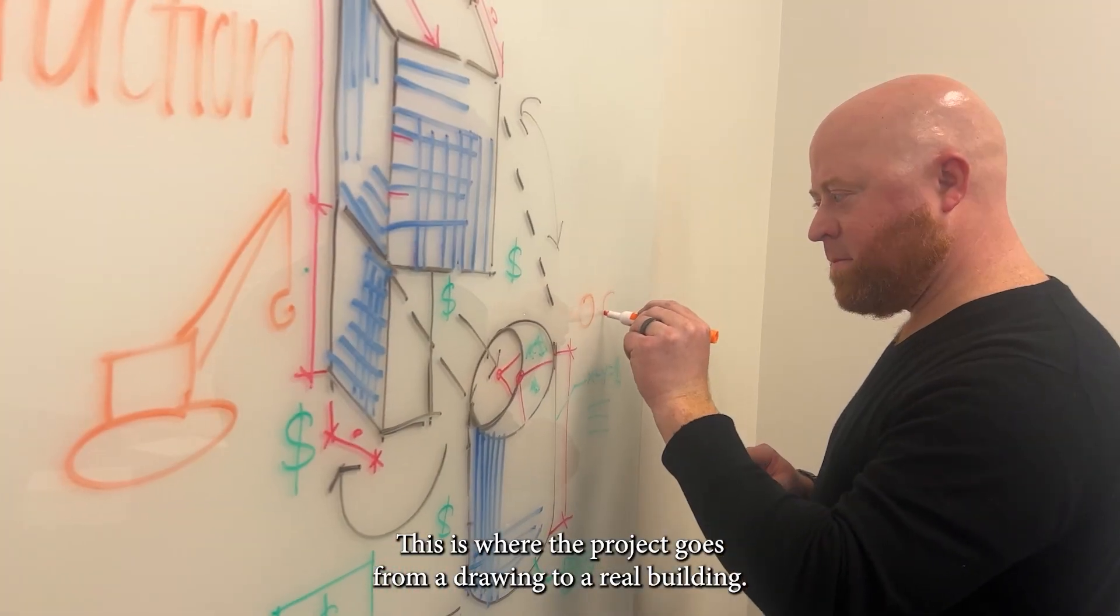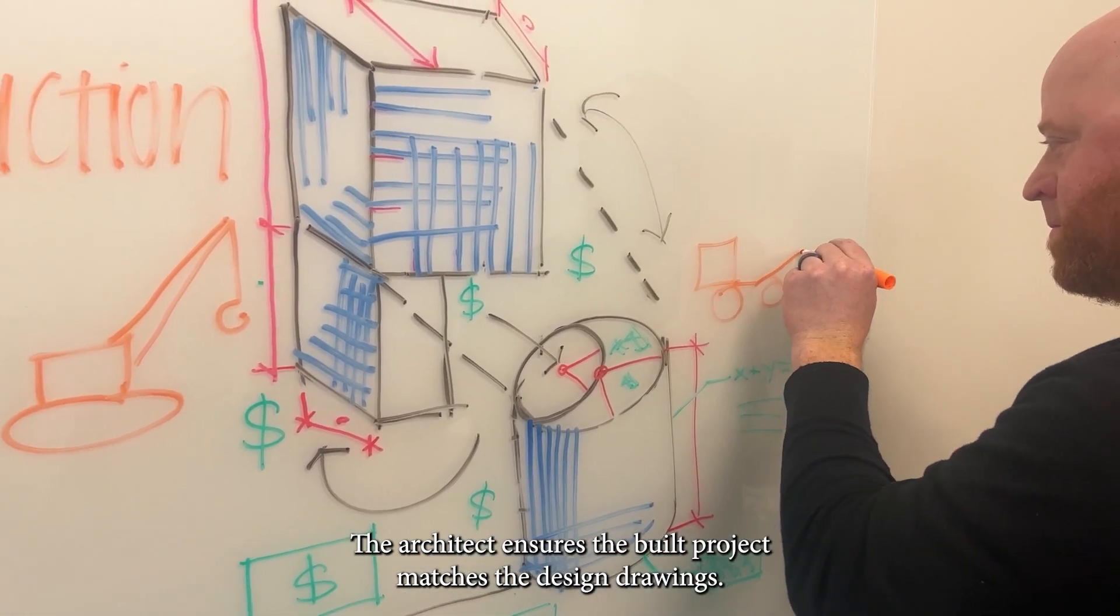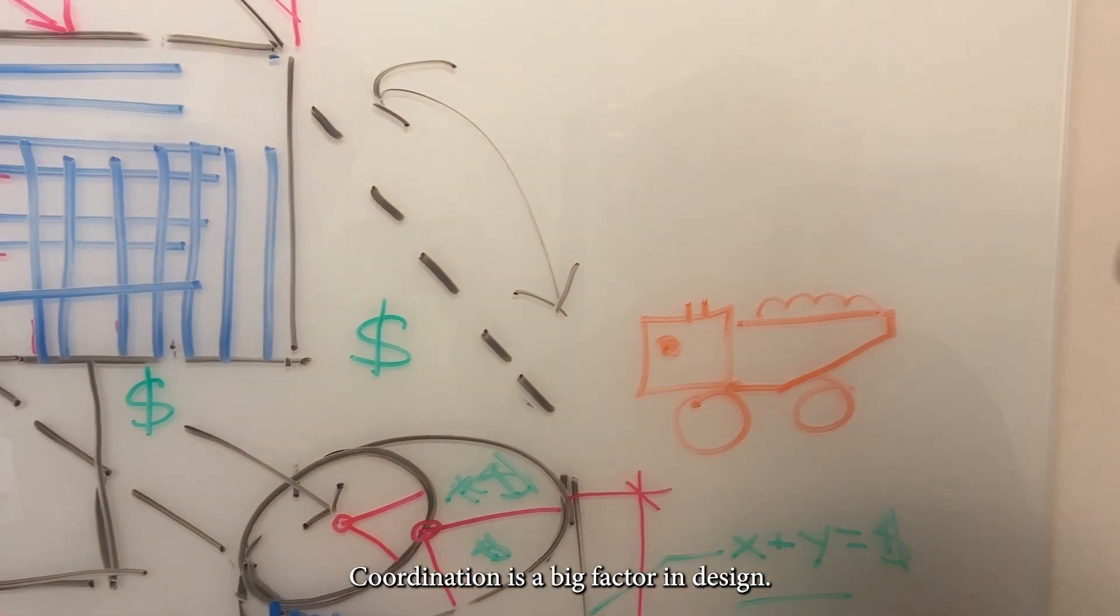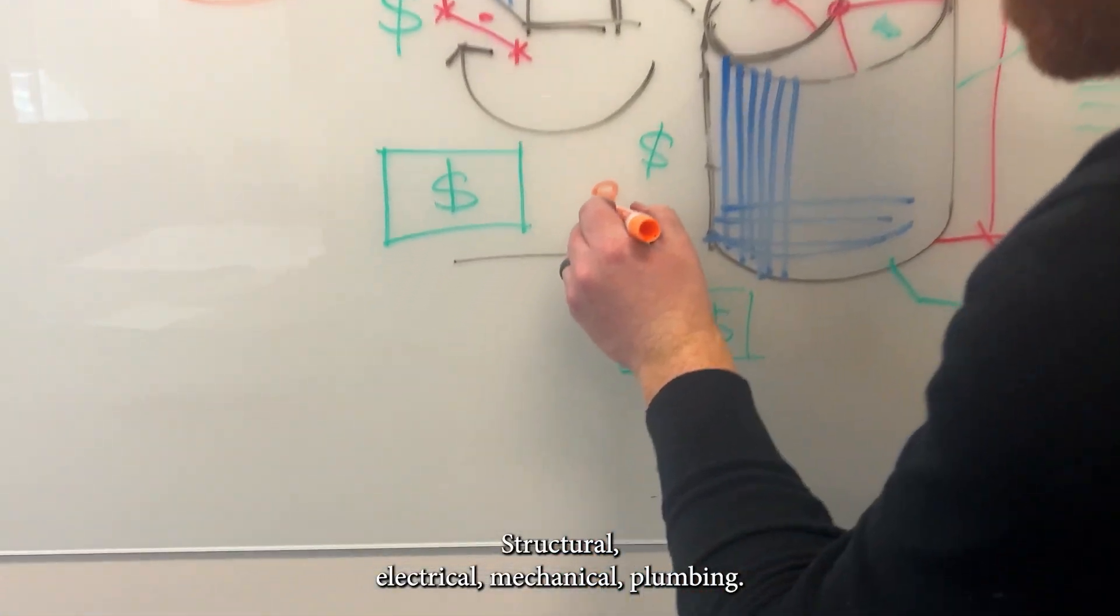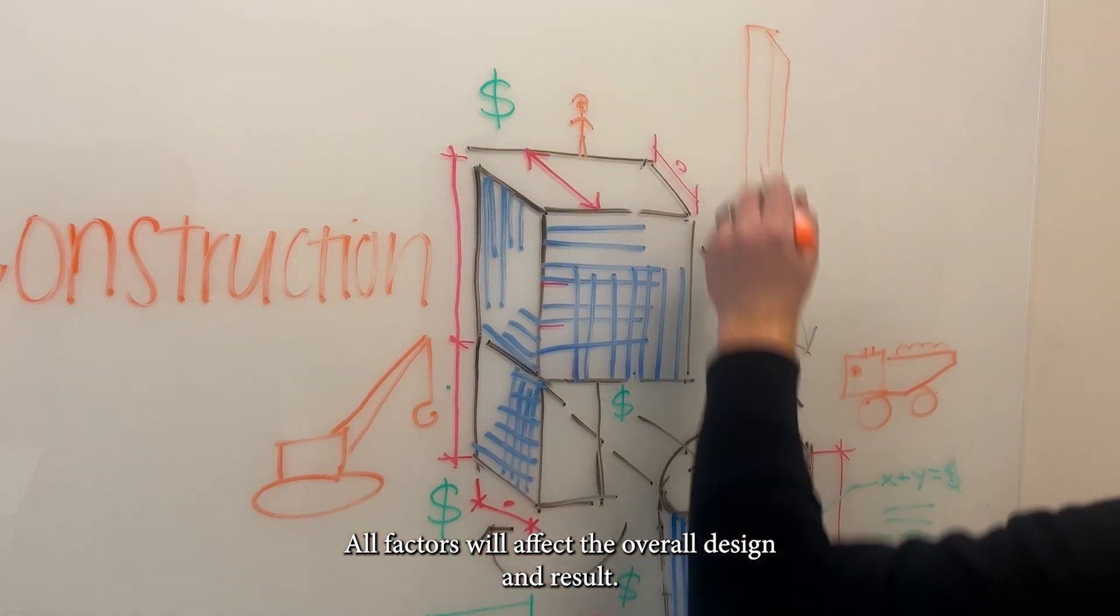This is where the project goes from a drawing to a real building. The architect ensures the built project matches the design drawings. Coordination is a big factor in design: structural, electrical, mechanical, plumbing. All factors will affect the overall design and end result.